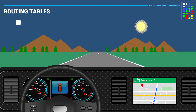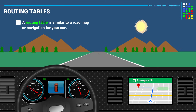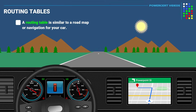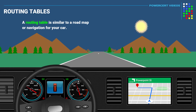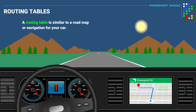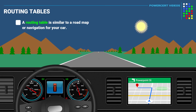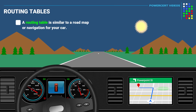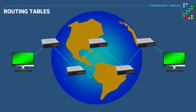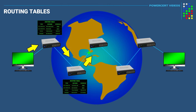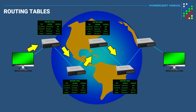A routing table is similar to a road map or a navigation for your car. If you were traveling to a certain destination anywhere in the world, for example on vacation, you will most likely need directions or a map on how to get from point A to point B. Well in the world of networking it works the same way — in order for data to travel across the network and reach its destination, it needs directions to determine how to get there.